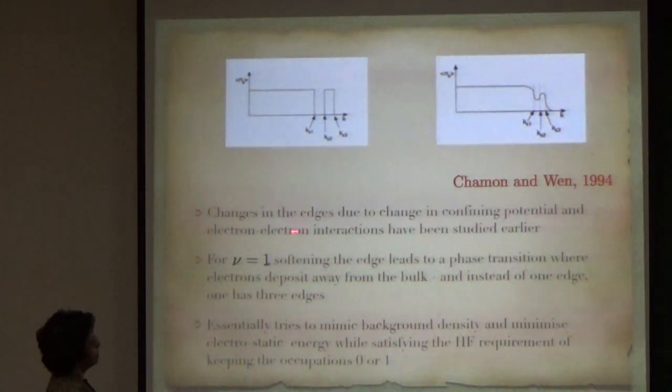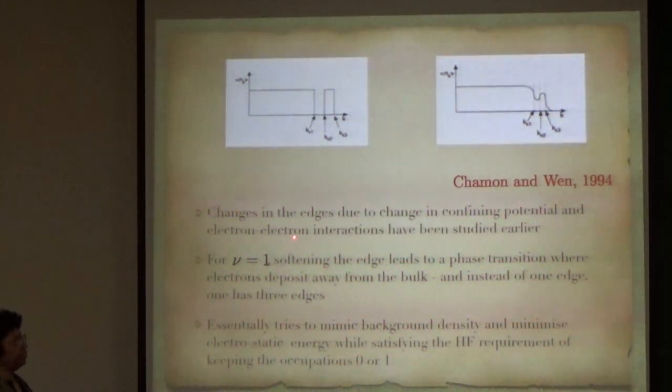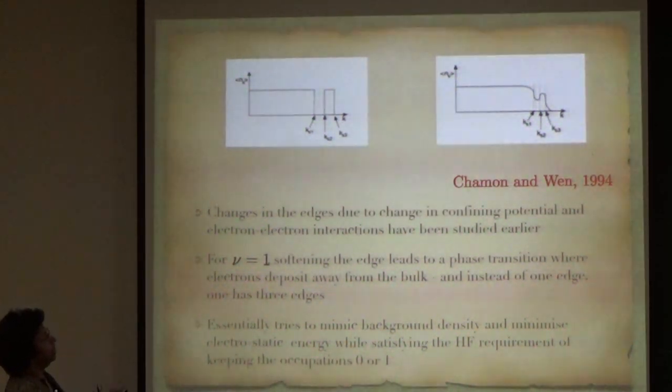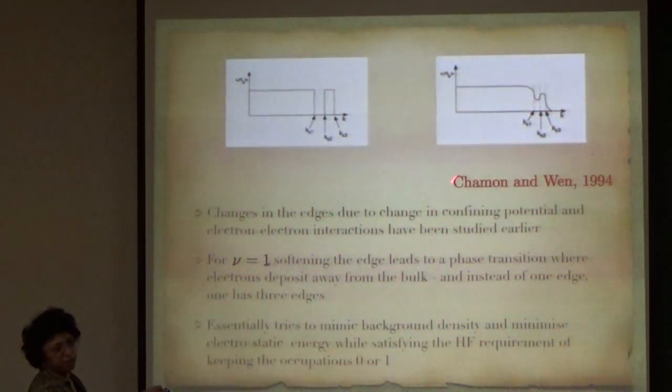What one finds is that there are changes in the edge due to the change in confining potential. And electron-electron interactions have been studied earlier, first by Chklovskii and Shklovskii in 1992, and what they found is that for nu equals 1, for one filled Landau level, if you soften the edge, it leads to a phase transition where the electrons deposit away from the bulk, and instead of one edge, you are actually left with three edges. These are three edges. This is in the Hartree-Fock, this is actually by doing an exact computation.